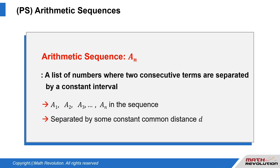An arithmetic sequence is a list of numbers where two consecutive terms are separated by a constant interval, also called a common distance. If an arithmetic sequence is a, we have terms a, a, and so on, separated by some constant common distance, d.